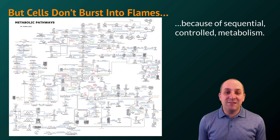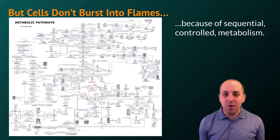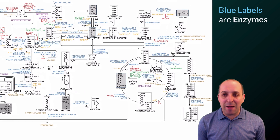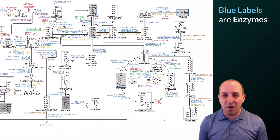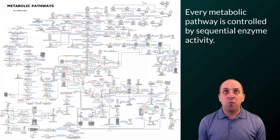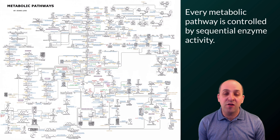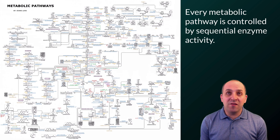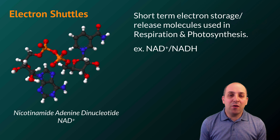This is a relatively detailed map of metabolic pathways in a typical eukaryotic cell. The blue labels in this map are enzymes. Notice that almost without exception, every step in every one of these metabolic processes is controlled by a particular enzyme. Rather than releasing all of the energy stored inside food molecules at once, the energy is released in small amounts sequentially through a series of enzyme-mediated reactions.